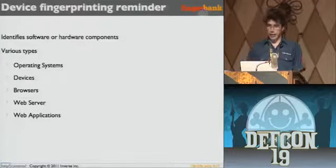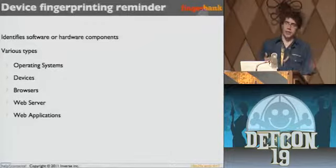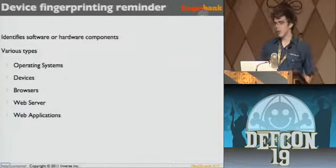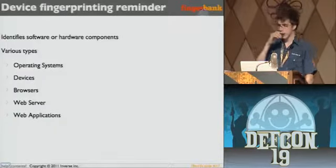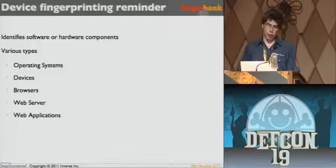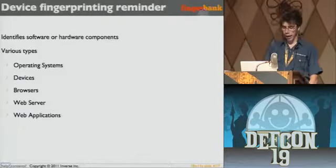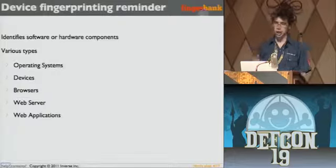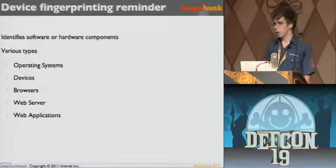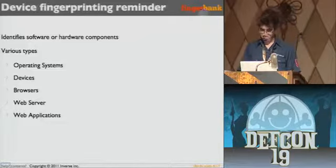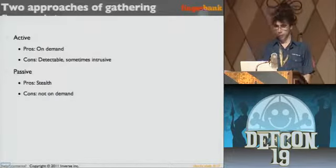Device fingerprinting — what it does is identify pieces of your software or hardware. You're probably familiar with p0f and stuff like that. There are various types: operating systems, devices, browser, web server, web application. It's another type of signature, more or less.